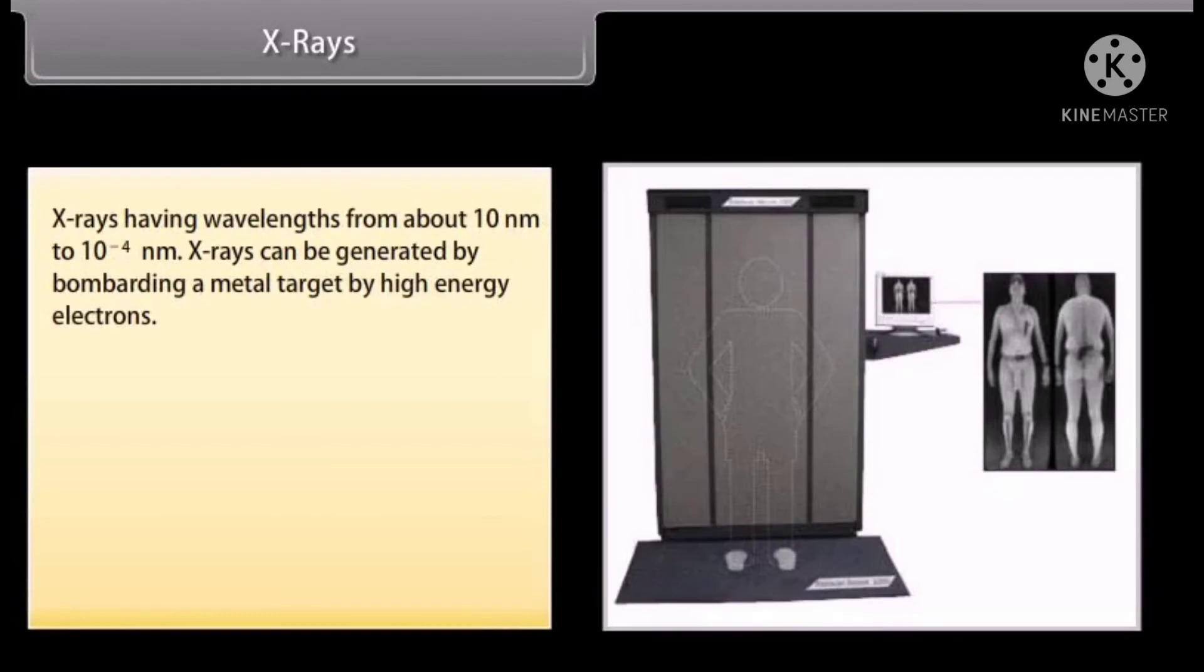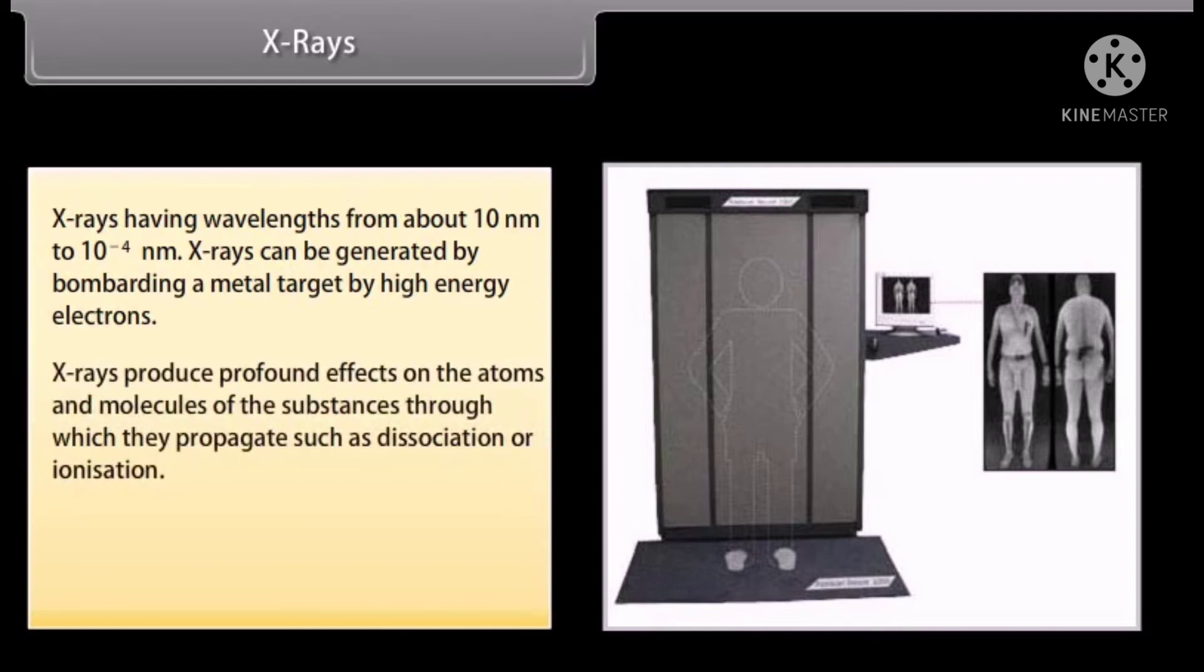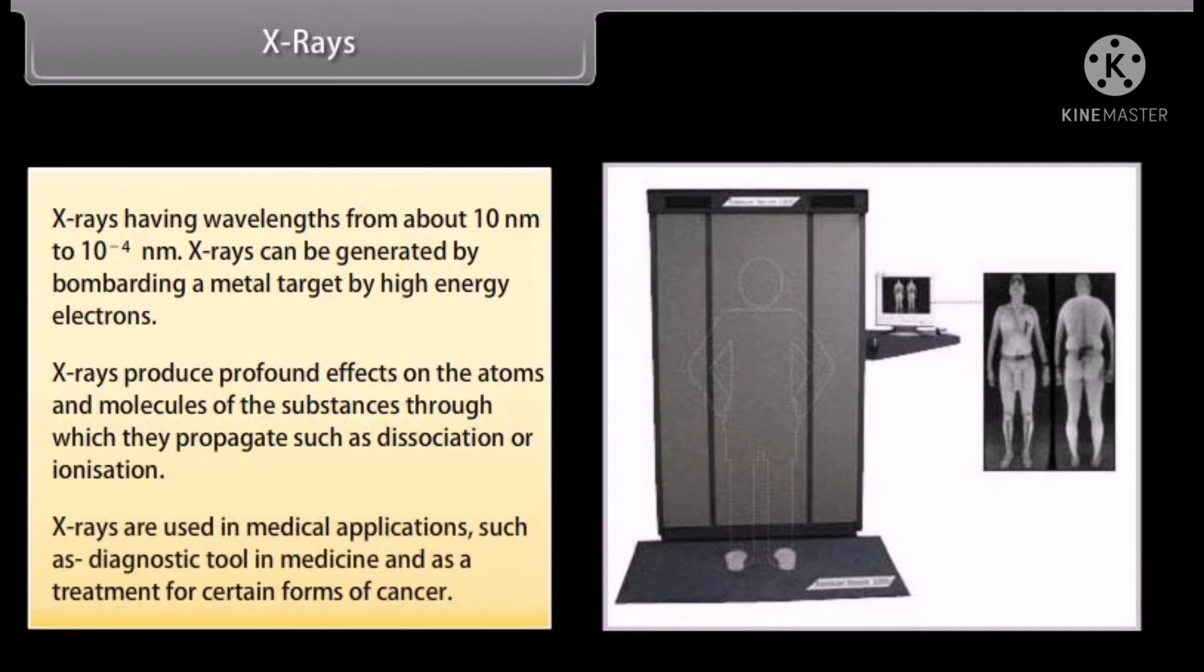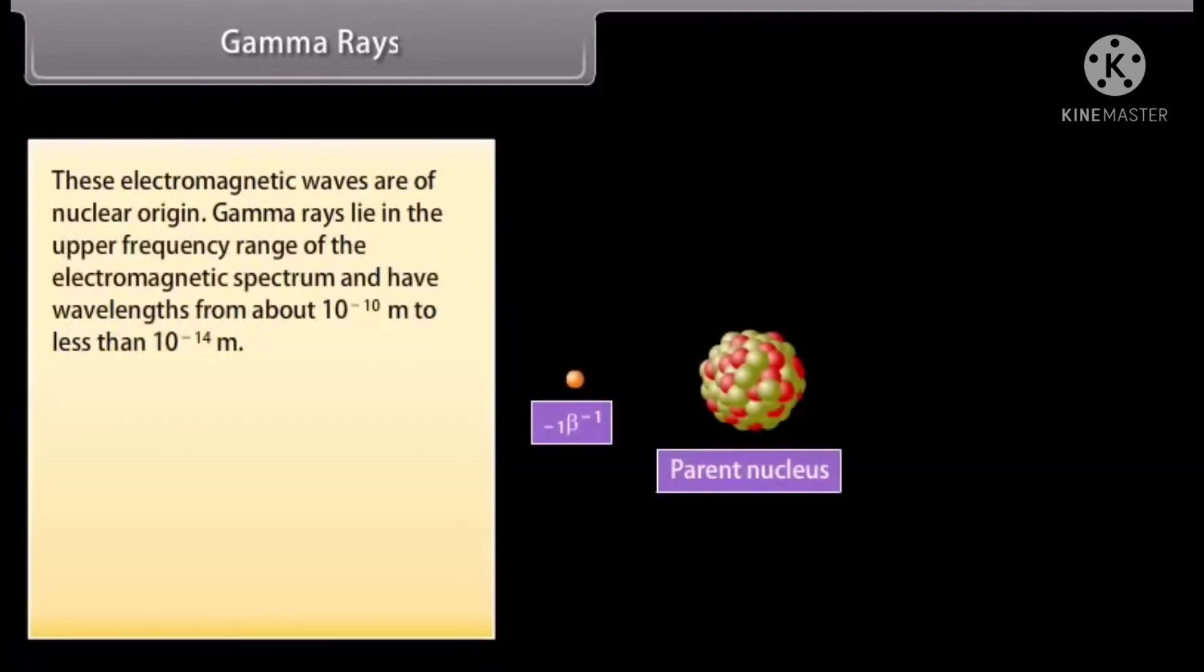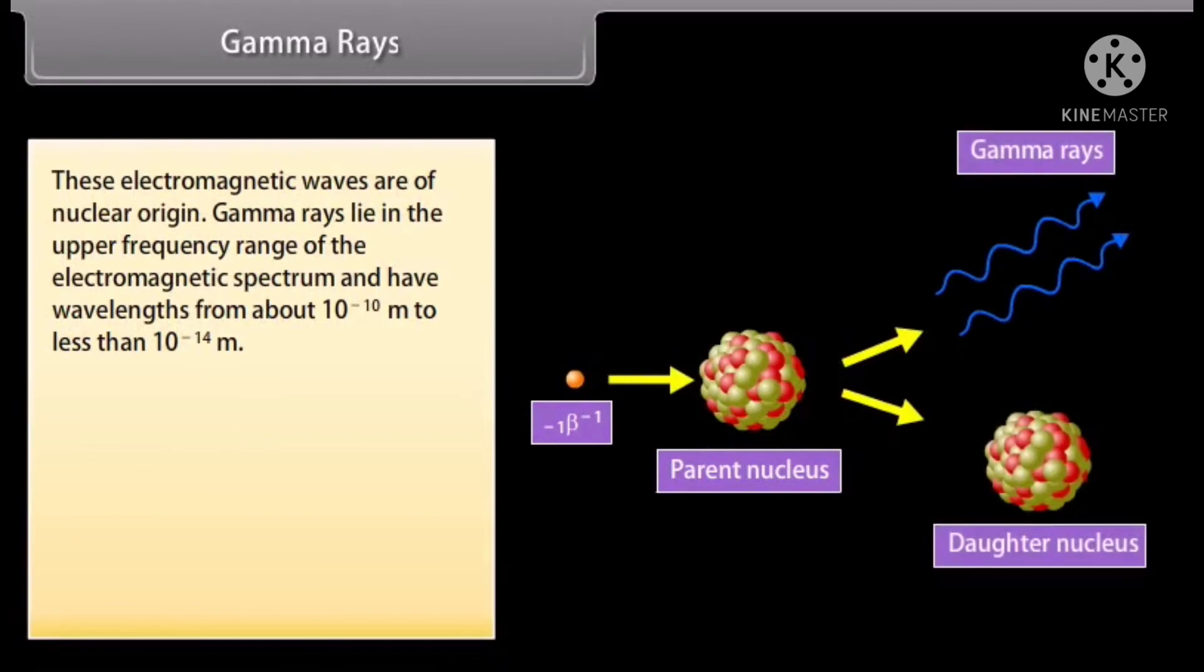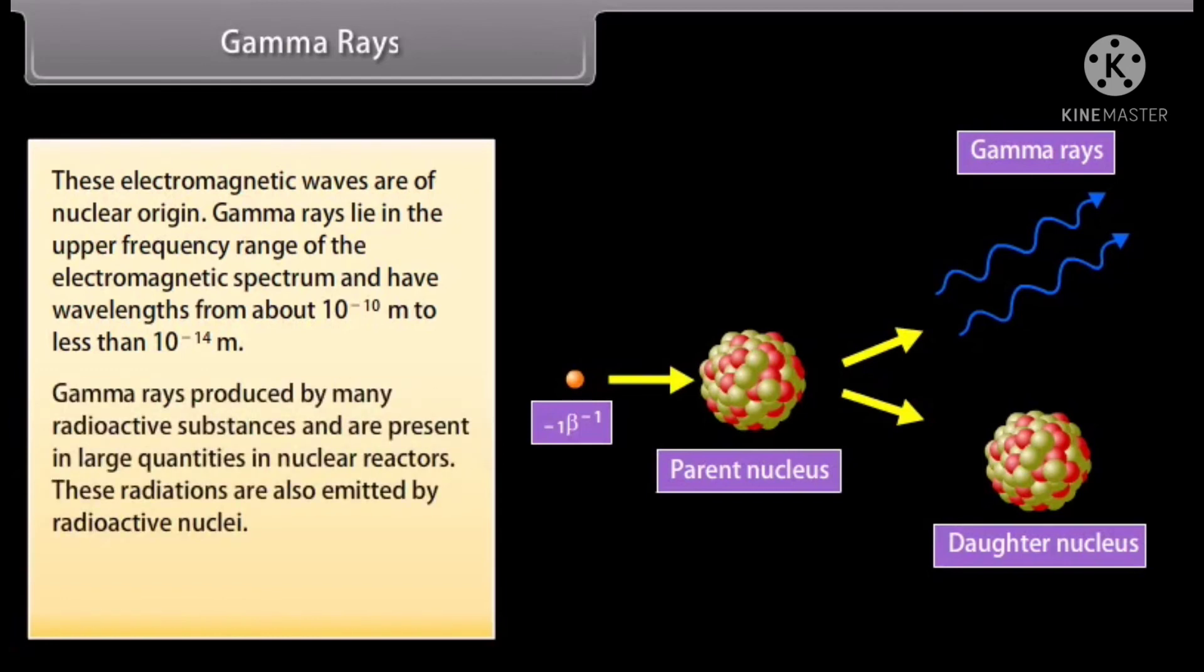X-rays: X-rays lie within 10 nanometers or less. X-rays can be generated by bombarding a metal target by high-energy electrons. X-rays produce profound effects on the atoms and molecules of the substances through which they propagate such as dissociation or ionization. X-rays are used in medical applications such as diagnostic tool in medicine and as a treatment for certain forms of cancer. Gamma rays: These electromagnetic waves are of nuclear origin. Gamma rays lie in the upper frequency range of the electromagnetic spectrum and have wavelengths from about 10 raised to the power minus 10 meter to less than 10 raised to the power minus 14 meter. Gamma rays produced by many radioactive substances and are present in large quantities in nuclear reactors. These radiations are also emitted by radioactive nuclei. They are used in medicine to destroy cancer cells.